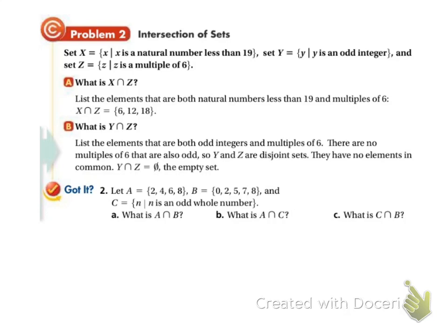Okay, so let's try our got it problem down here. So they listed out A, B, and C. So A is in roster form, B is in roster form, but C is in set builder notation. So I'm going to rewrite it.